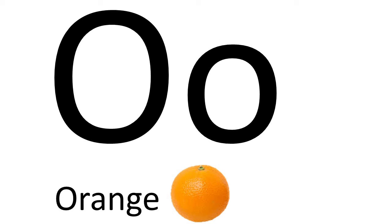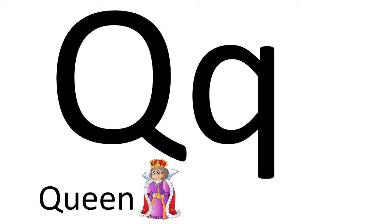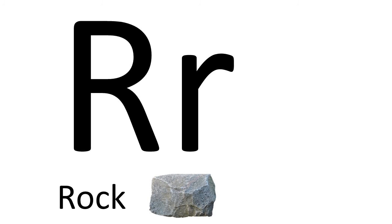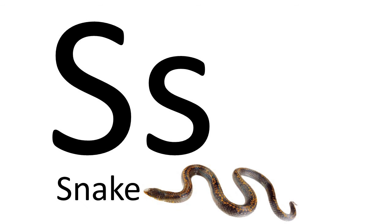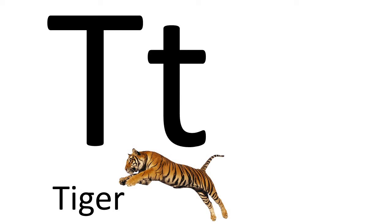Alphabet O, sound 'o', example: orange. O, o, orange. Alphabet P, sound 'p', example: popcorn. P, p, popcorn. Alphabet Q, sound 'qu', example: queen. Qu, qu, queen. Alphabet R, sound 'r', example: rock. Alphabet S, sound 's', example: snake. S, s, snake. Alphabet T, sound 't', example: tiger. T, t, tiger.